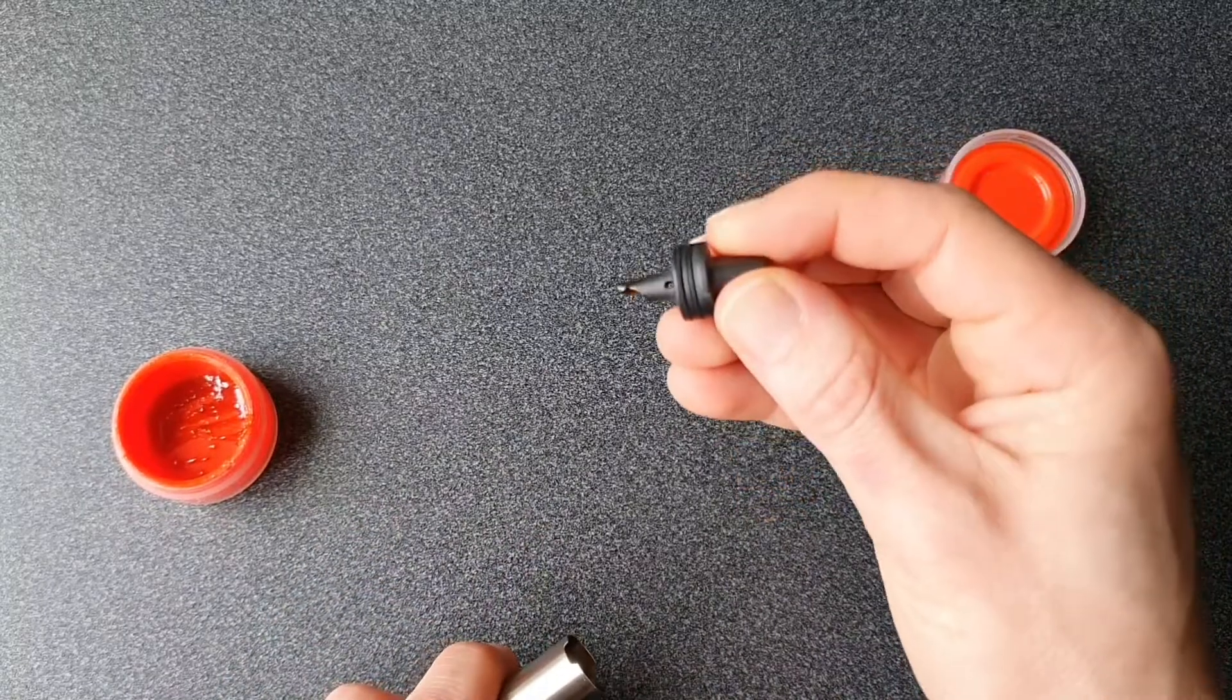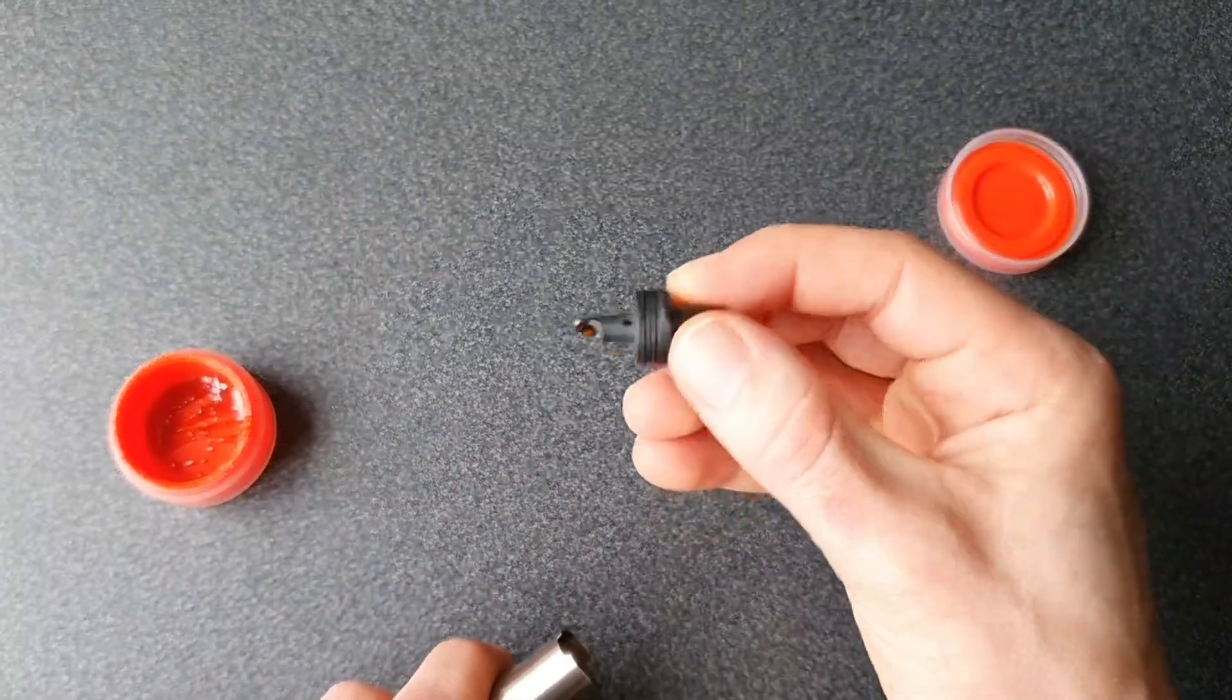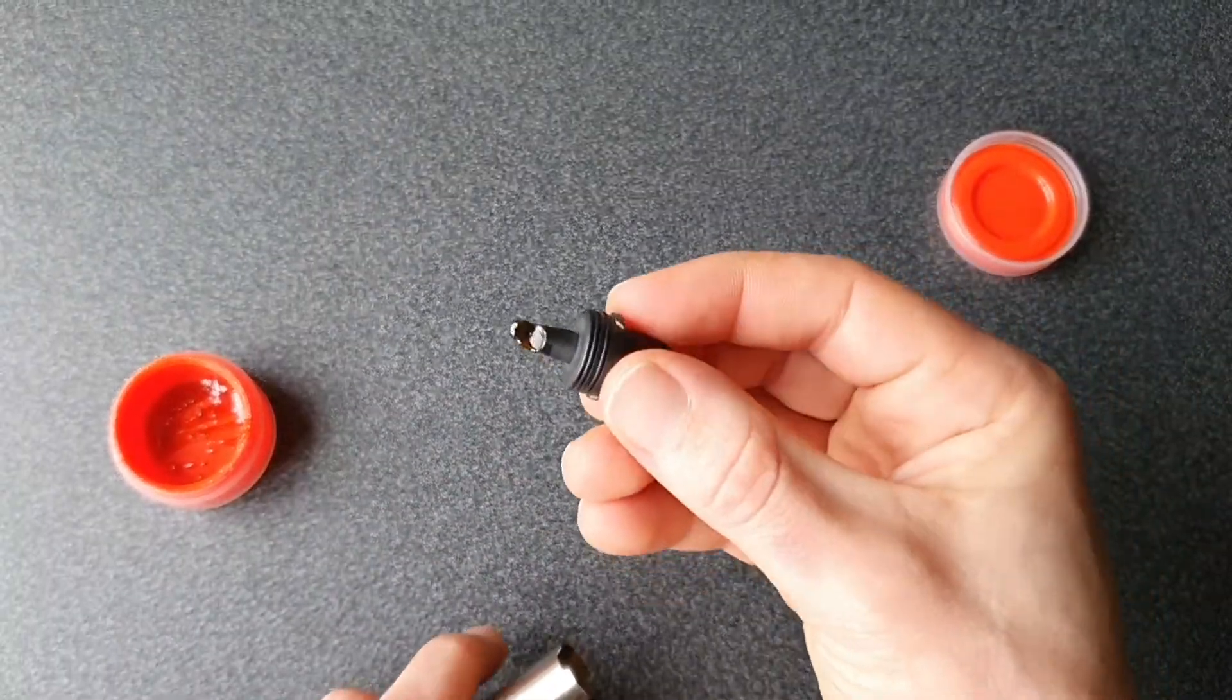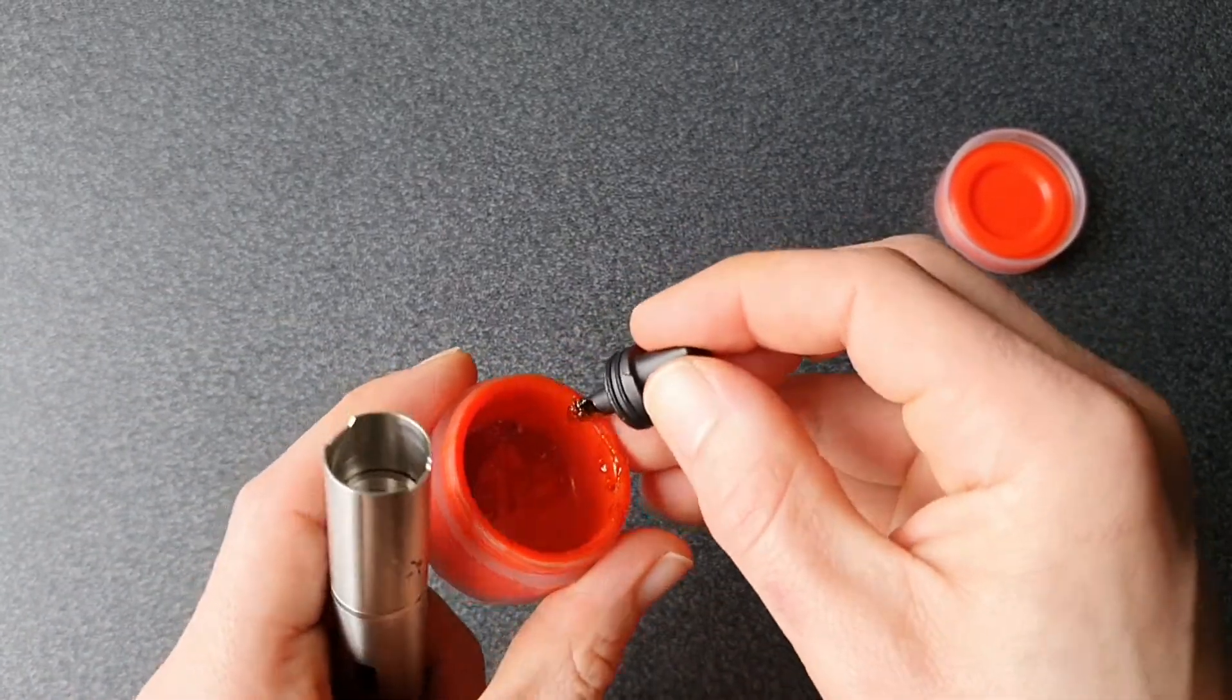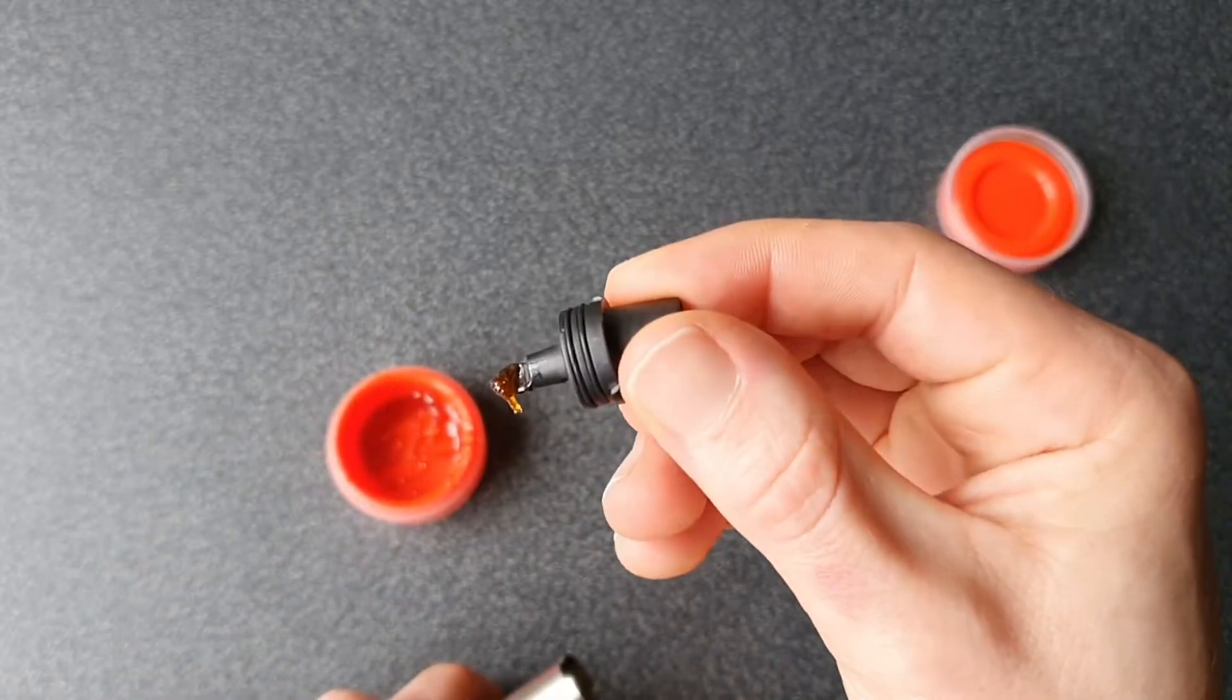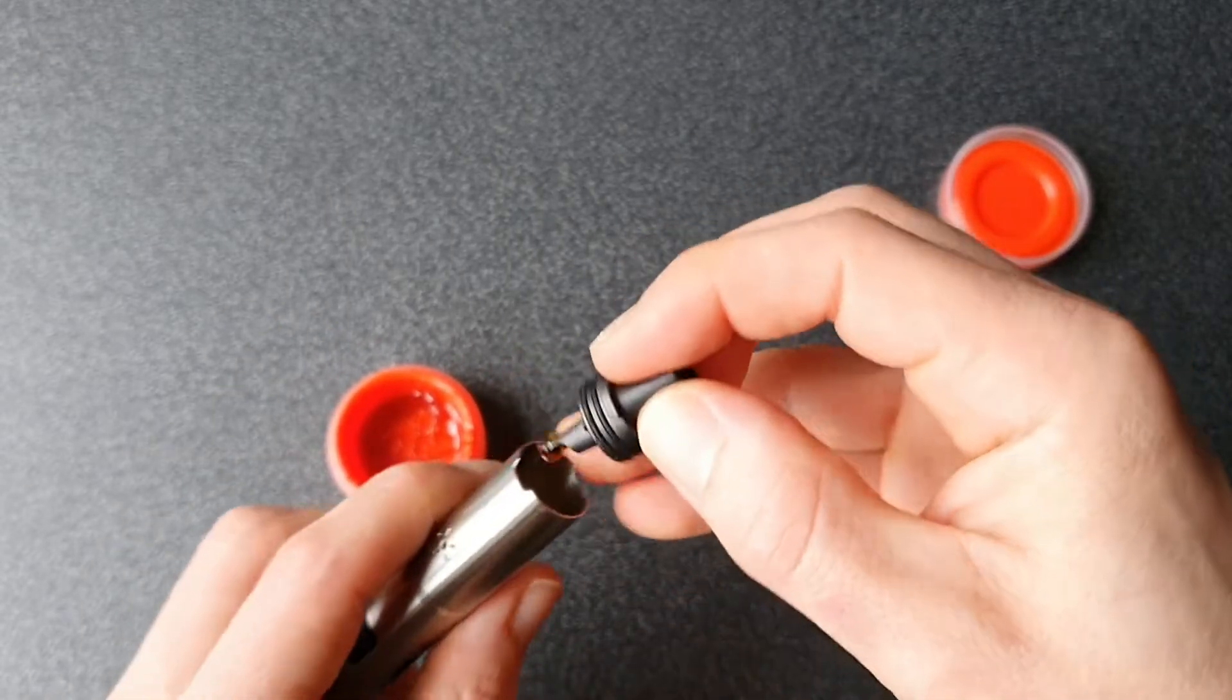So I've put a little dab on the dab tool. It doesn't have to be perfect and it doesn't have to be big. Although I will get a little bit bigger than that just so you can actually see the dab. There we go. Right. Reasonable. Not massive.